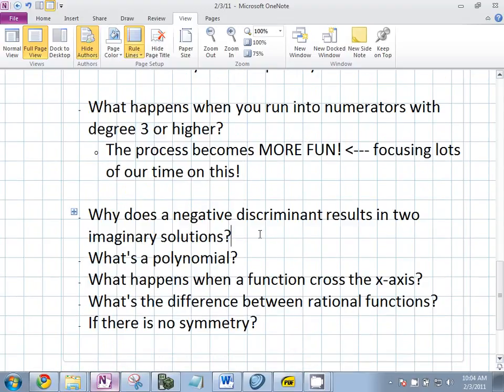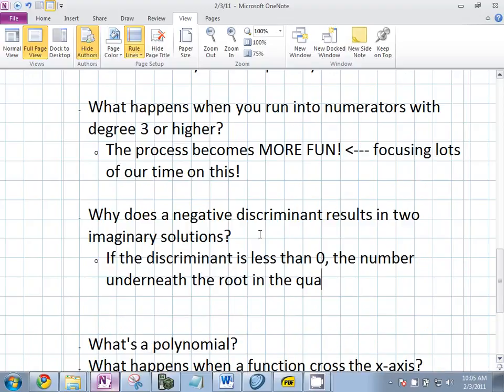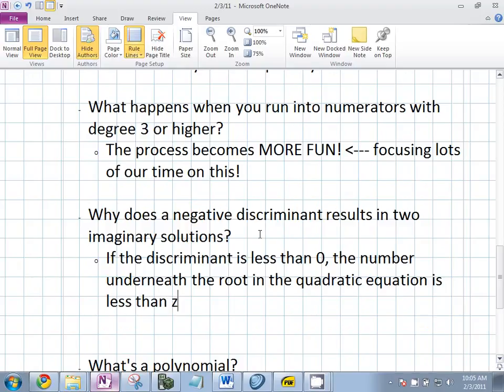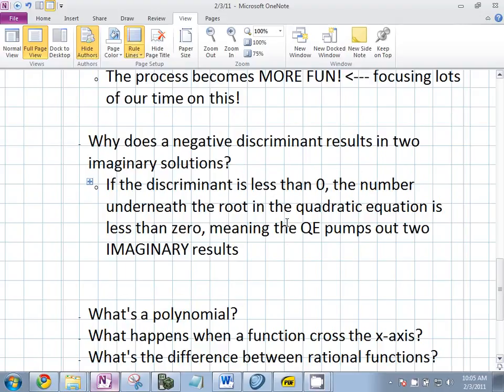Why does a negative discriminant result in two imaginary solutions? Can anybody explain that to me? If the discriminant is less than zero, the number underneath the root in the quadratic equation, if the discriminant is less than zero, you're taking the square root of a negative number, which results in two imaginary numbers. Can we graph imaginary numbers on the real number line? No. You can't. So, that's why it results in. What happens if the discriminant is zero? What type of answer do you have? Only one. One real. Real. And if it's greater than zero, you have two real. Two real.